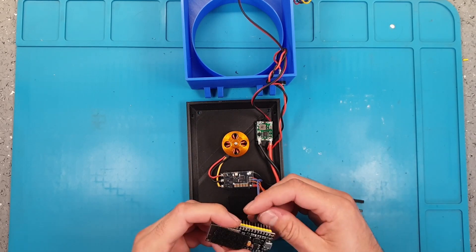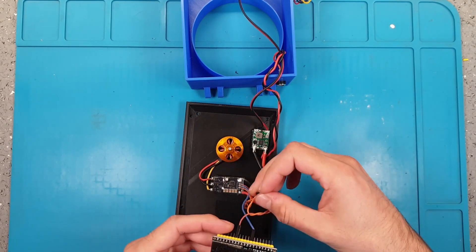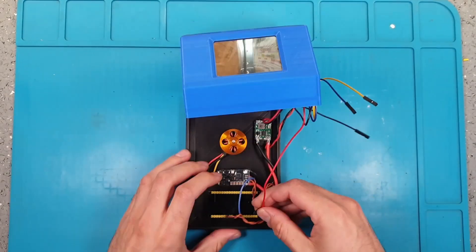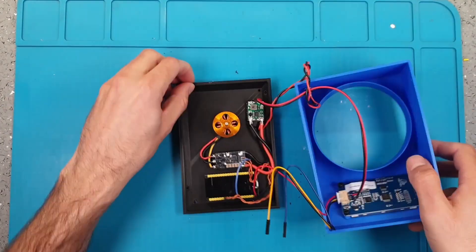When everything is in place we can connect our ESP32 to the ESC and the display. Before powering everything make sure your connections match the schematics.